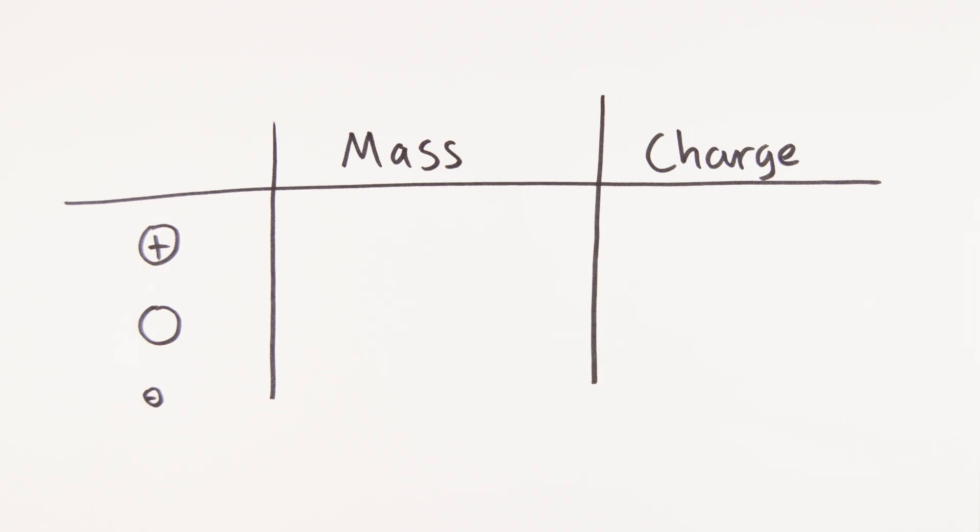Each of the subatomic particles has a relative mass and charge. The proton has a mass of one and a relative charge of plus one. The neutron also has a mass of one, but surprisingly hence the name, a charge of zero.